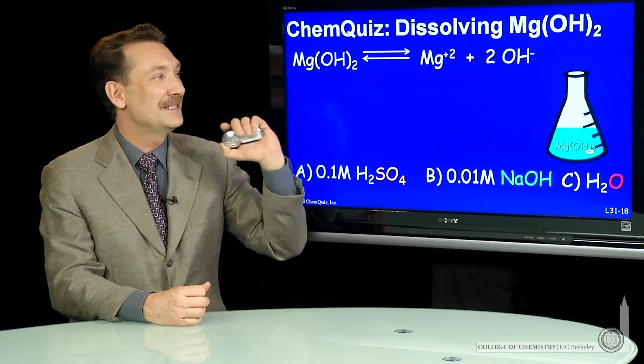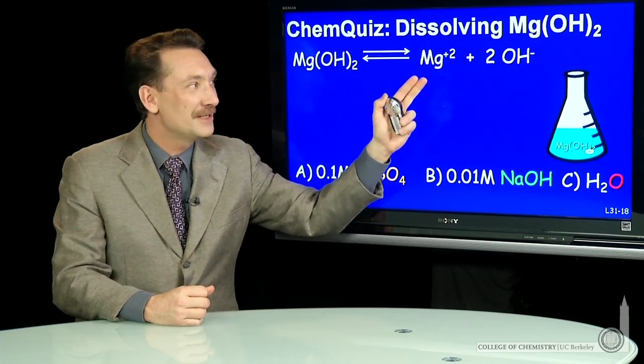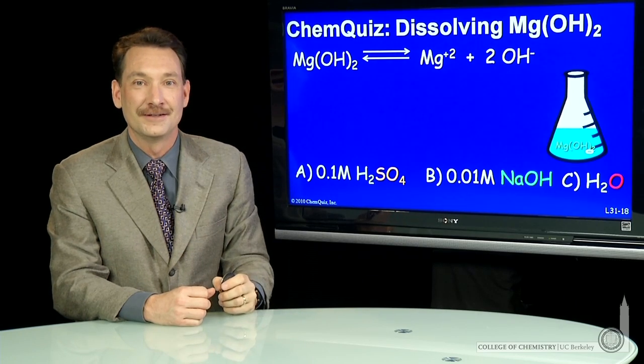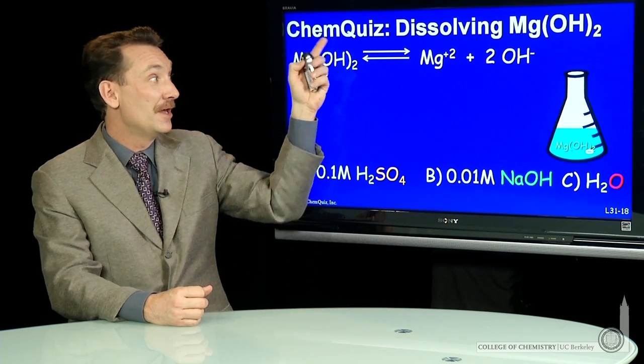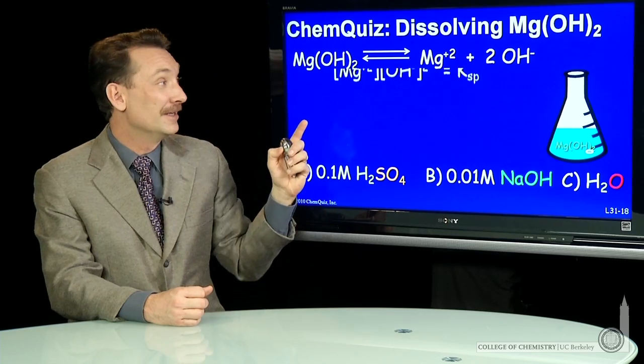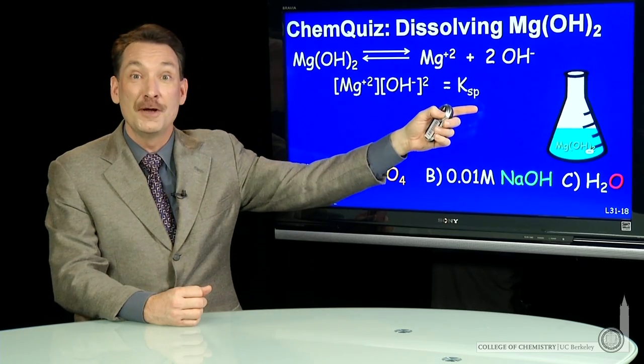We're dissolving magnesium hydroxide in water to form magnesium and hydroxide ions. Magnesium hydroxide is sparingly soluble. So the reaction favors the solid.